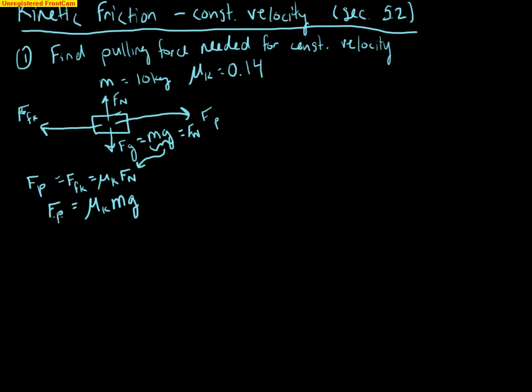And notice I put this equal to the pulling force because that's what we're really trying to find and that's equal to F_fk. So now we have our pulling force would be the 0.14 times the mass which is 10 kilograms times G which is 9.8 meters per second squared. So we have 0.14 times 10 times 9.8, that gives us 13.72 newtons.